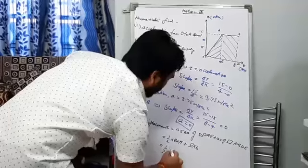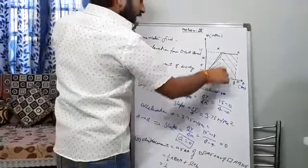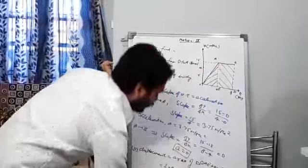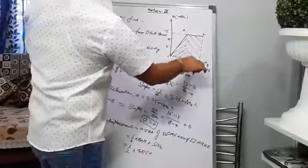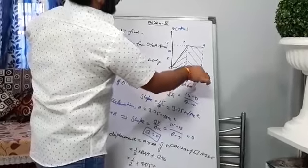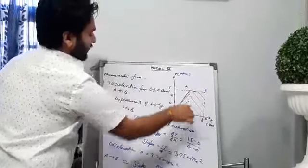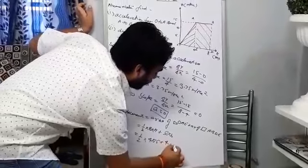Just find out, 1 by 2, triangle is OAE, base is 4, height is 15. So 1 by 2 base into height plus area of rectangle, length into breadth. Length is 4 and breadth is 15, so 4 into 15.